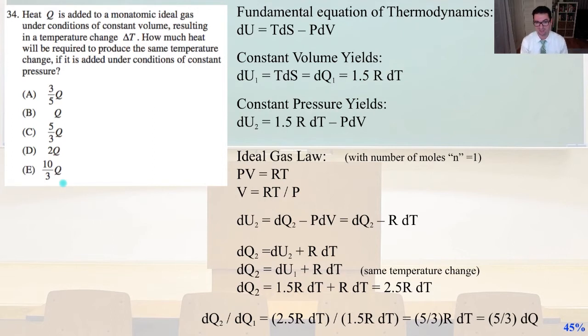So the fundamental equation of thermodynamics, dU equals TdS minus PdV. So constant volume yields dU1 equals TdS equals dQ1 equals 1.5R dt. So constant pressure yields dU2 equals 1.5R dt minus PdV. So from the ideal gas law, with the number of moles N equals 1, PV equals RT, so V equals RT over P. So we're going to do some algebra here. dU2 equals dQ2 minus PdV equals dQ2 minus RT. So we're going to do some algebra down to the bottom where we have...